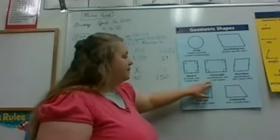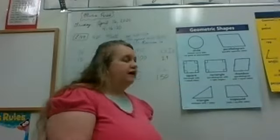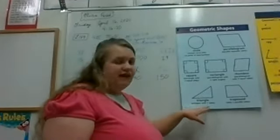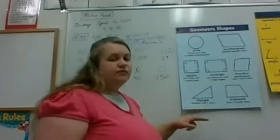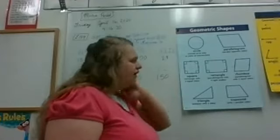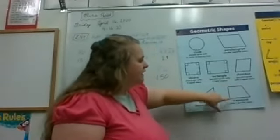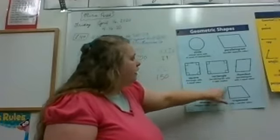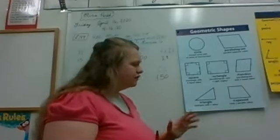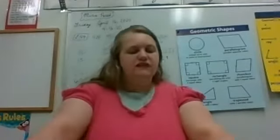A square is a rectangle with four equal sides. A rectangle is a parallelogram with four right angles. A rhombus is a parallelogram with equal sides. A triangle is a polygon — meaning many-sided figure — with three sides, and triangles come in many different sizes and shapes. A trapezoid has only two of its sides parallel, and it can have a couple of different shapes.